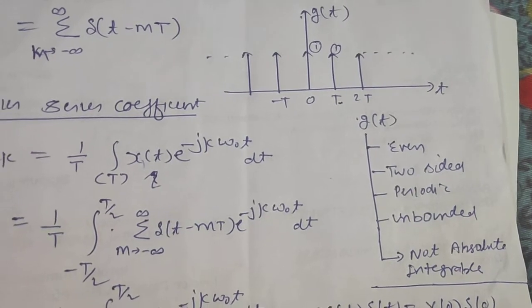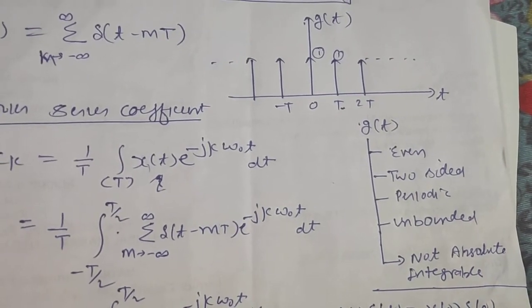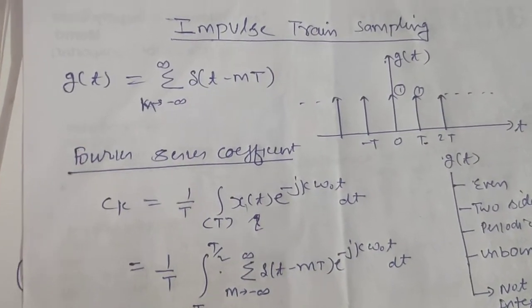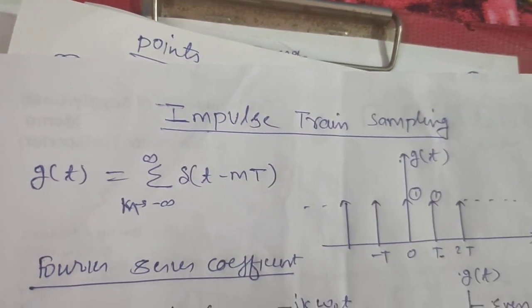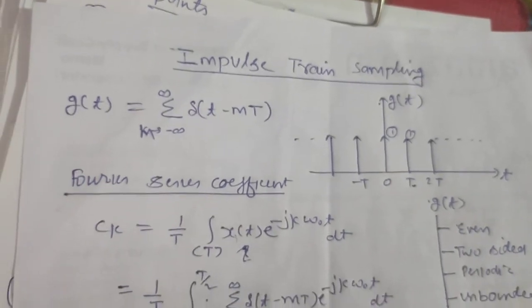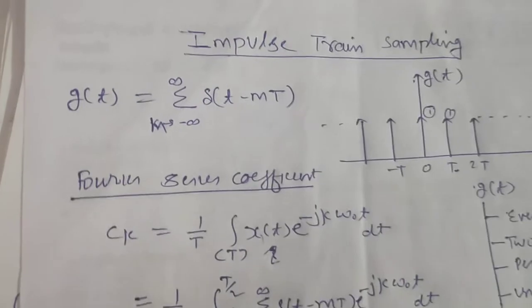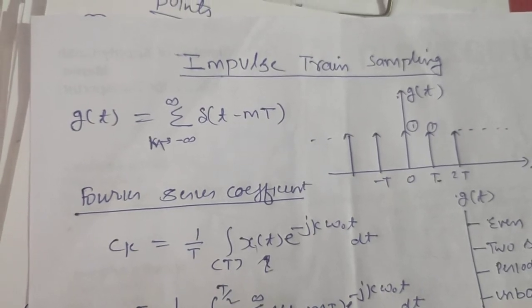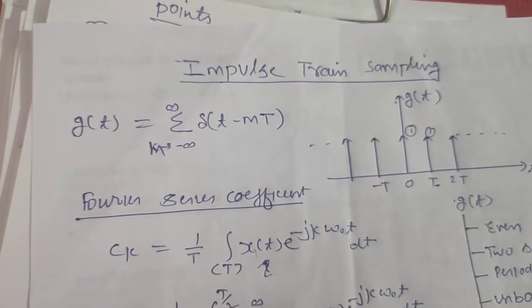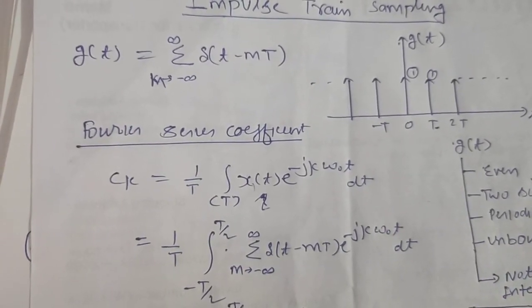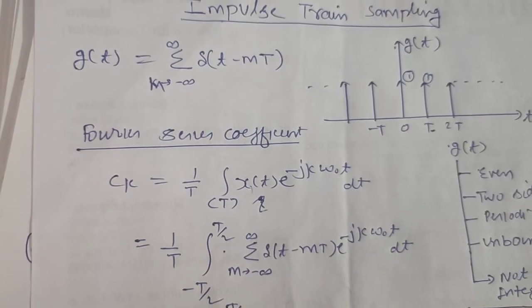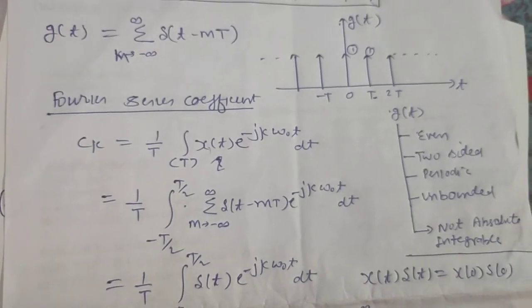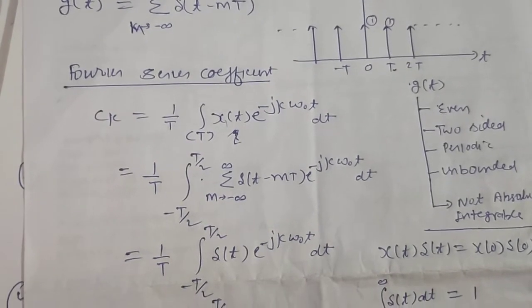The impulse train is unbounded because the magnitude goes to infinity, and it is not absolutely integrable. We can write g(t) as a summation from m equals minus infinity to infinity of δ(t minus mT), because it is the sum of shifted impulses. Now for the Fourier series coefficient, the formula is: c_k equals 1 over T times the integral over one period of x(t) times e raised to minus j·k·ω₀·t. I am taking the limit from minus T/2 to T/2, with x(t) written as the summation of δ(t minus mT). In this period, only one impulse exists at t equal to 0, which means only δ(t) exists.